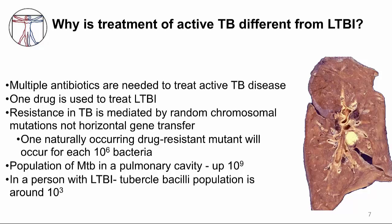Resistance in TB occurs because of random chromosomal mutations, not horizontal gene transfer such as plasmids. In a population of a million MTB bacilli, one will be naturally resistant to an antibiotic. A cavitary lesion caused by pulmonary TB disease can have about a billion MTB bacilli, so it's predicted that a thousand of the bacteria will be naturally antibiotic resistant even before any antibiotic exposure.